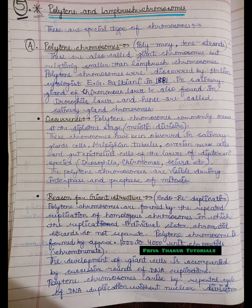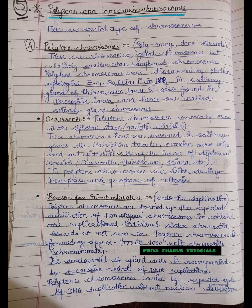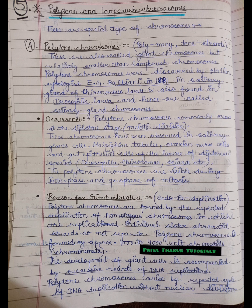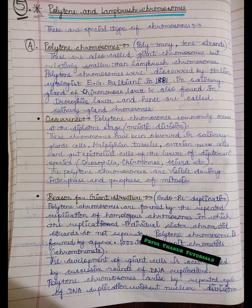Regarding their occurrence, polytene chromosomes commonly occur in the diplotene stage of meiotic division. These chromosomes have been observed in the salivary gland cells, Malpighian tubules, ovarian nerve cells, and gut epithelial cells of the larva of dipteran species. They are also visible during the interphase and prophase of mitosis.